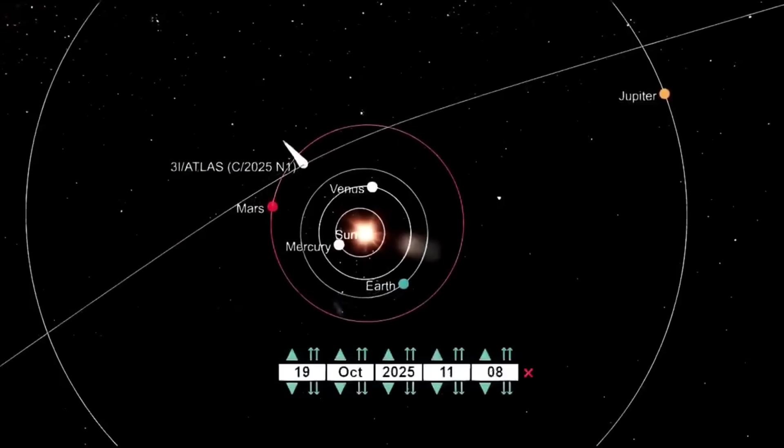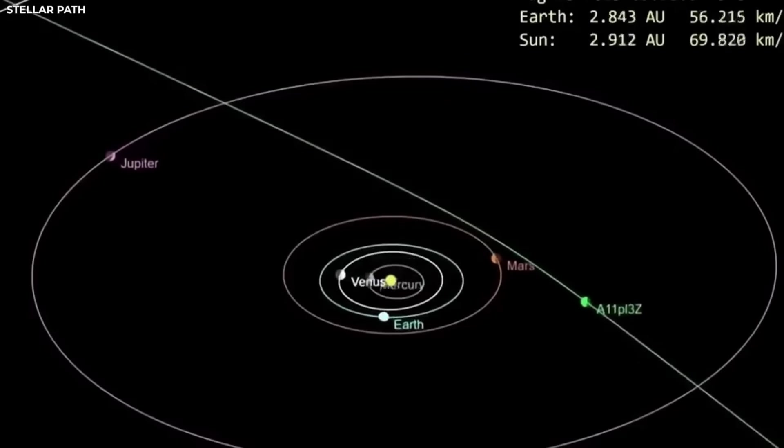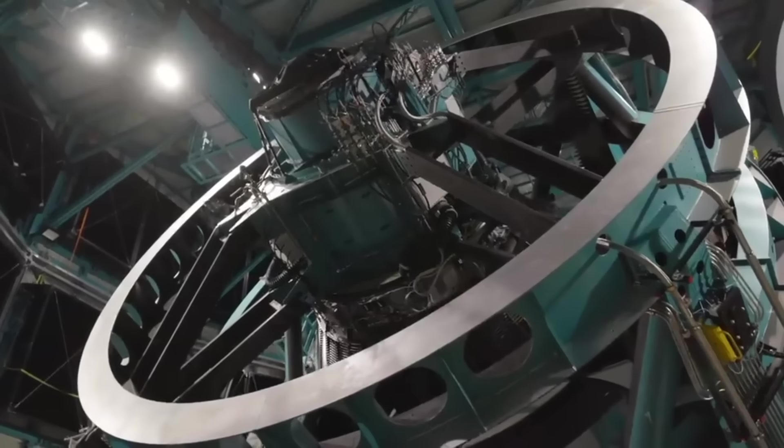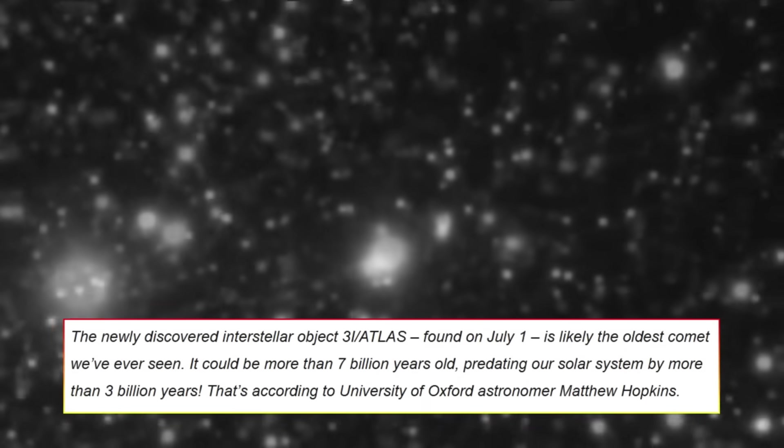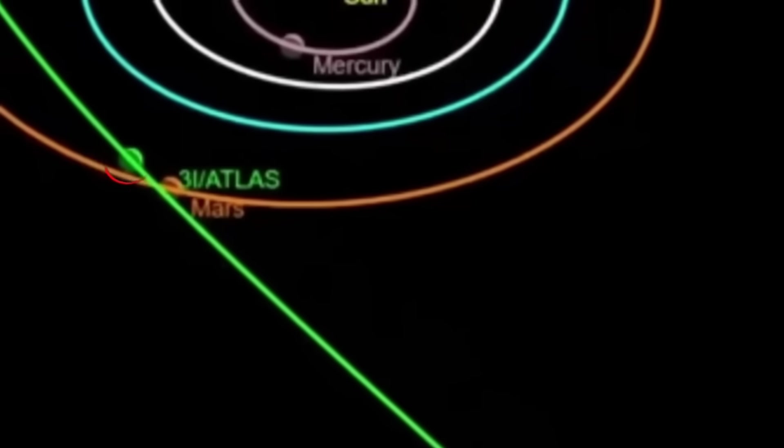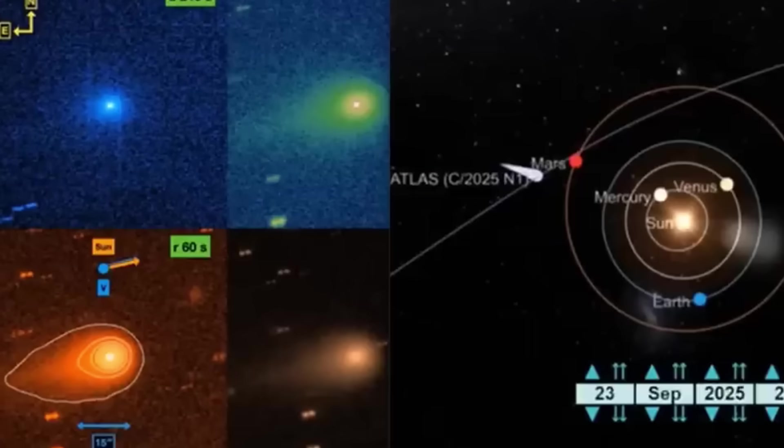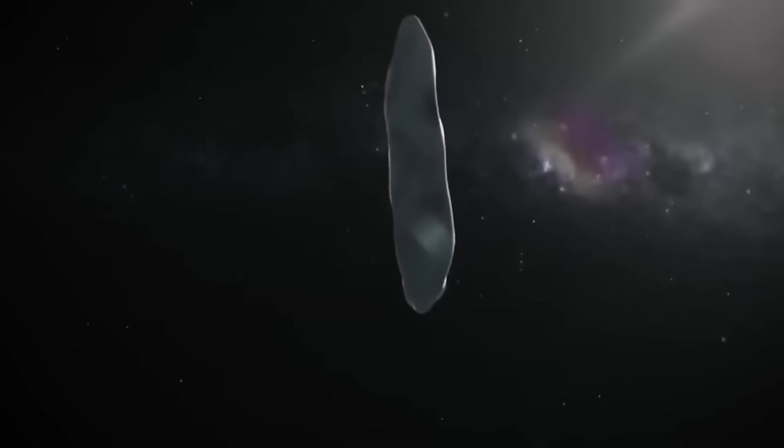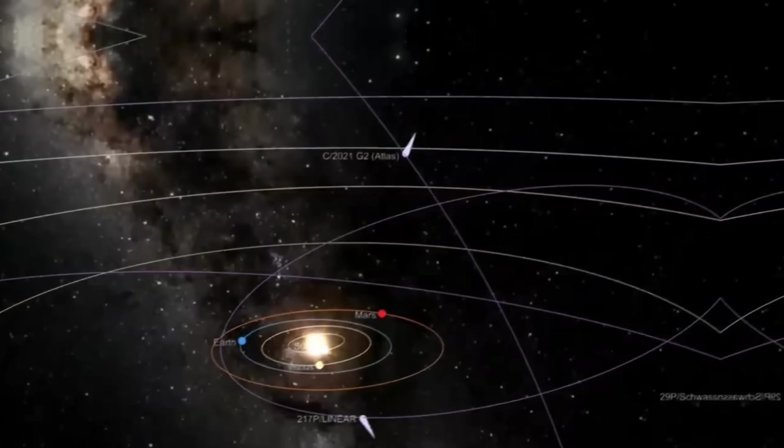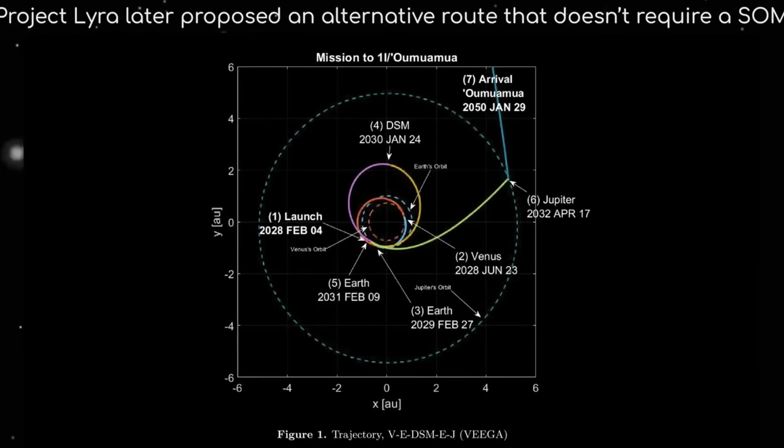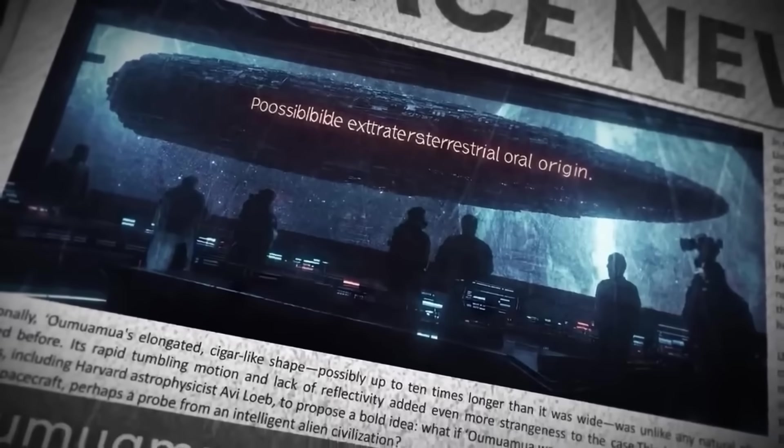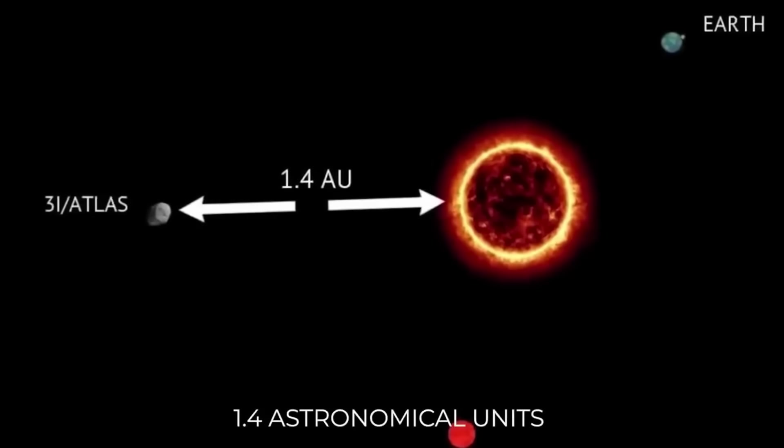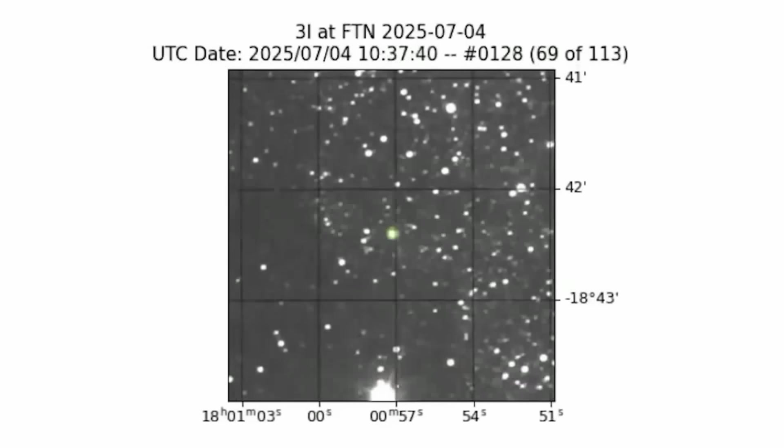Whether natural or engineered, these cosmic visitors represent something profound. Actual pieces of other star systems passing through our neighborhood. Studying them is like holding fragments of alien worlds in our hands, offering unprecedented insights into planetary formation beyond our sun. Each new interstellar visitor reminds us we are part of a vast and dynamic galaxy, notes an ESA science report. Sometimes, the universe comes to us.